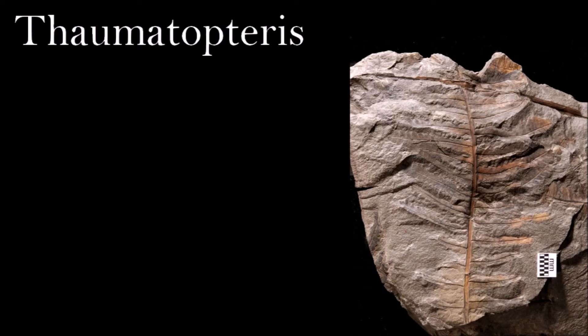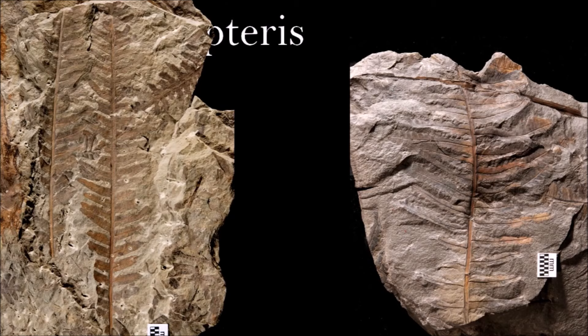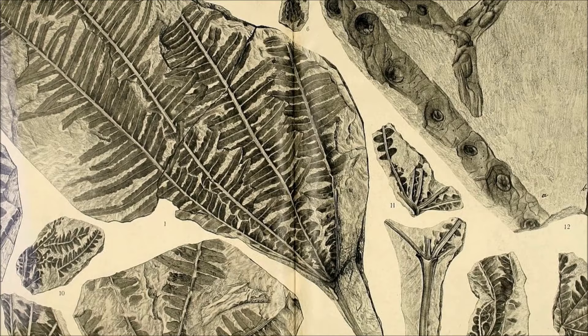Also known as Dictyophyllum, this common fossil plant is often used as a geological marker, helping identify layers of rock that were formed at a given point in time. Some Thaumatopteris species straddle the Triassic-Jurassic boundary, but many fossils appear only at the point where the Jurassic period began. Thaumatopteris can be identified by the complex network of veins in its long fronds. The veins divide and rejoin, forming a mesh on the leaf surface.